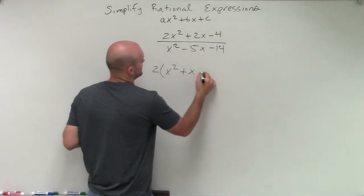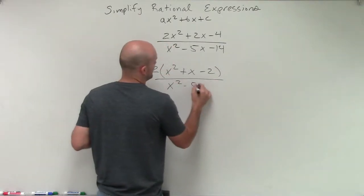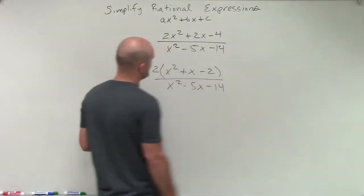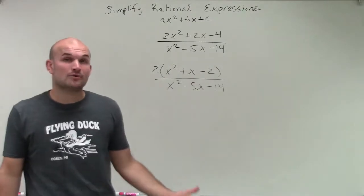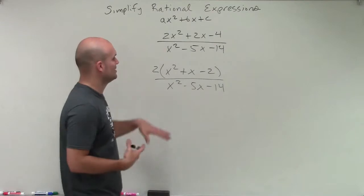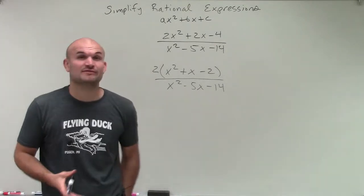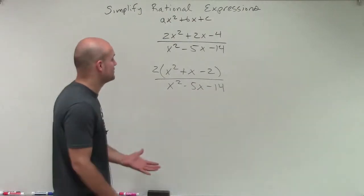So I factor out a 2, which is going to leave me with x squared plus x minus 2, divided by x squared minus 5x minus 14. Awesome. So now what we need to do is factor our numerator and our denominator. And I'm going to go through this a little bit quicker as far as my factoring techniques. I'm actually just going to do this by inspection rather than writing it out.